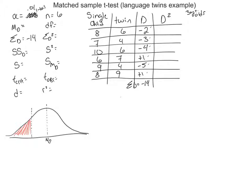Now we square each of those raw difference scores. Every time you square a negative number it becomes positive, so we follow that rule. We add up the sum of the squared differences: 4 plus 9 plus 16 plus 1 plus 25 plus 1, and we get 56.